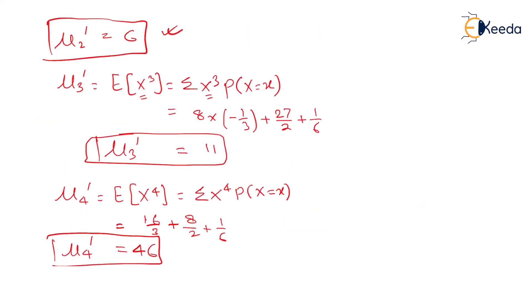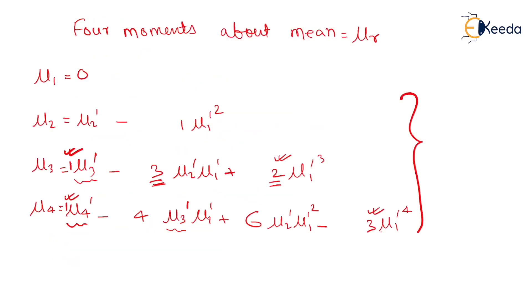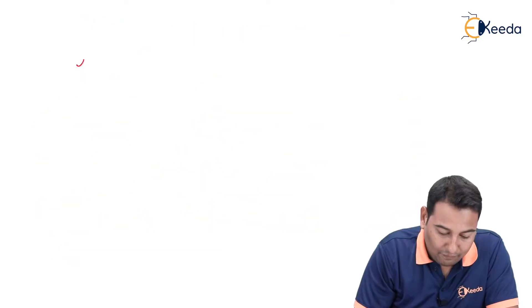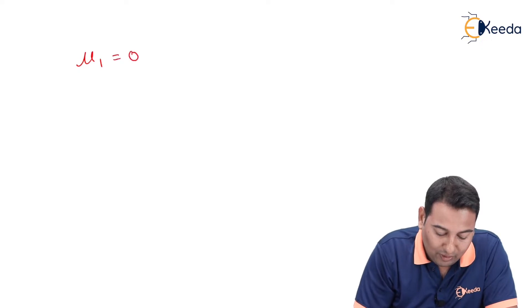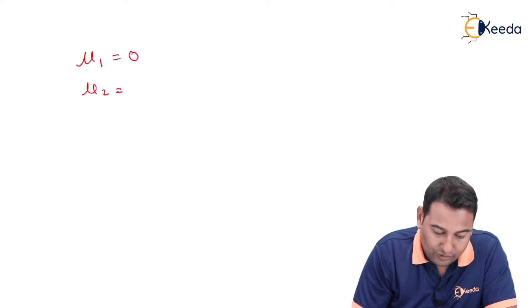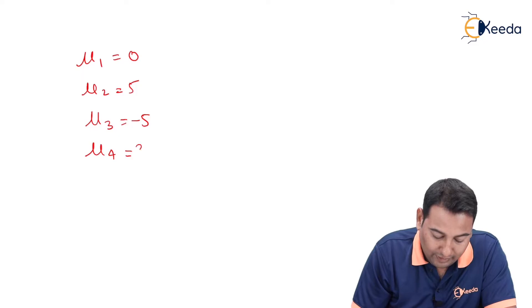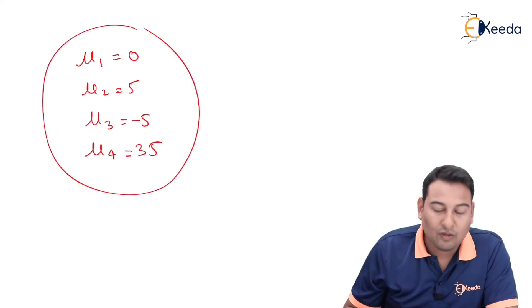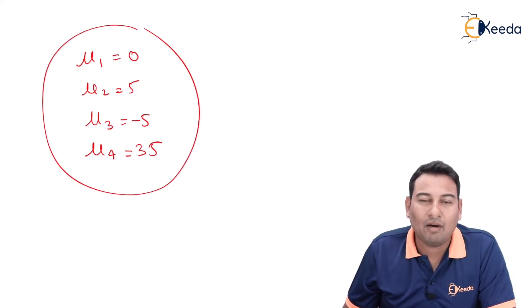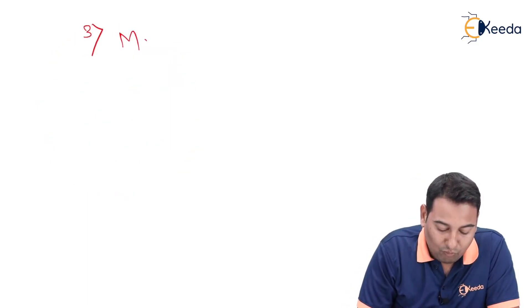All the raw moment values have already been found, so we just substitute them in. After substituting the values, we get: mu one equals zero, mu two equals five, mu three equals minus five, and mu four equals thirty-five. So these are the first four central moments about the mean.